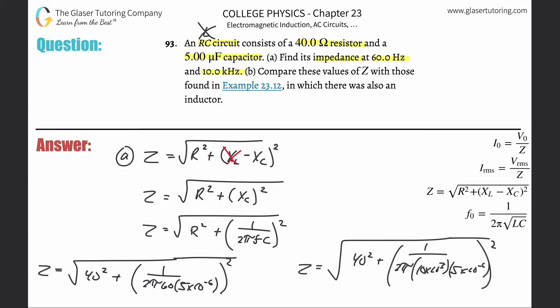Let's calculate the first one: square root of 40 squared plus, in parentheses, one divided by two pi times 60 times 5 times 10 to the minus sixth, close the double parentheses, and square that value. We get an impedance of about 532 ohms. Z is 532 ohms.